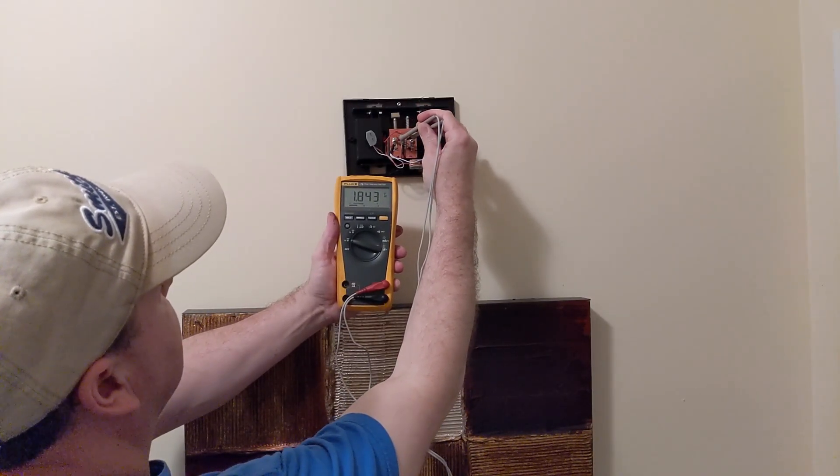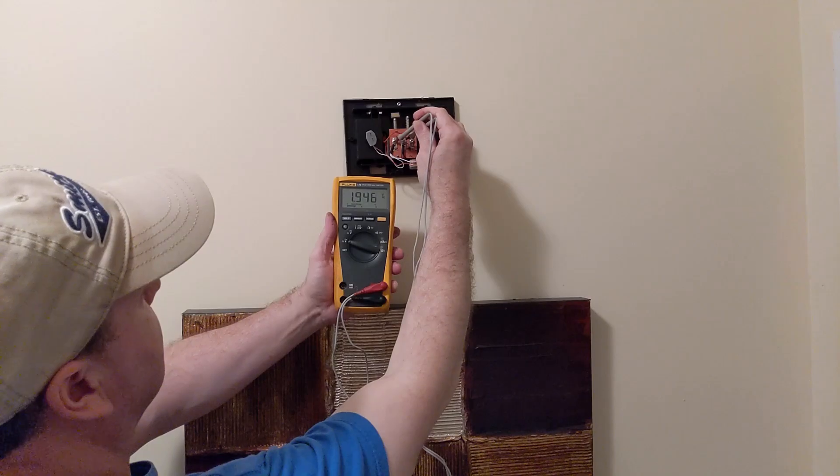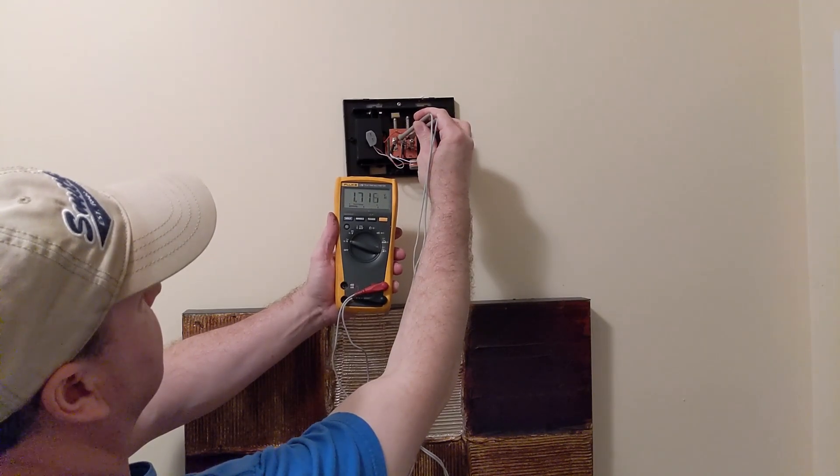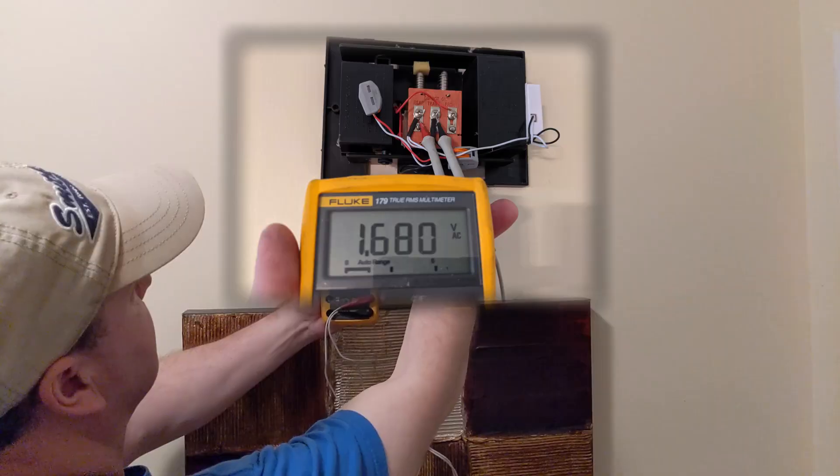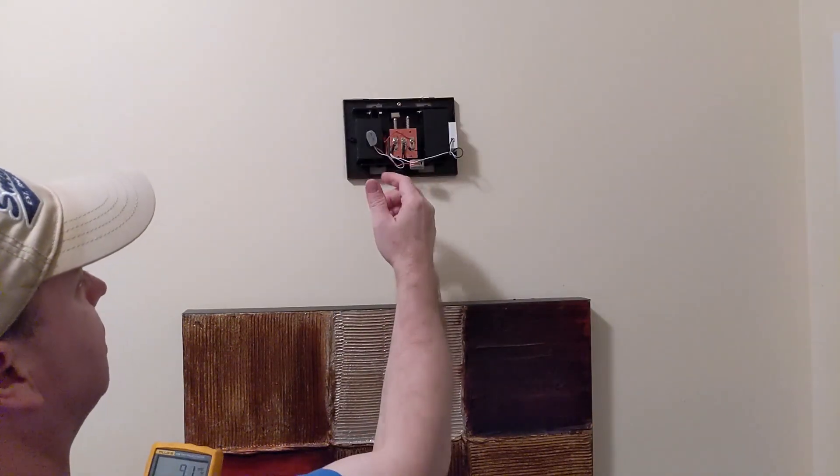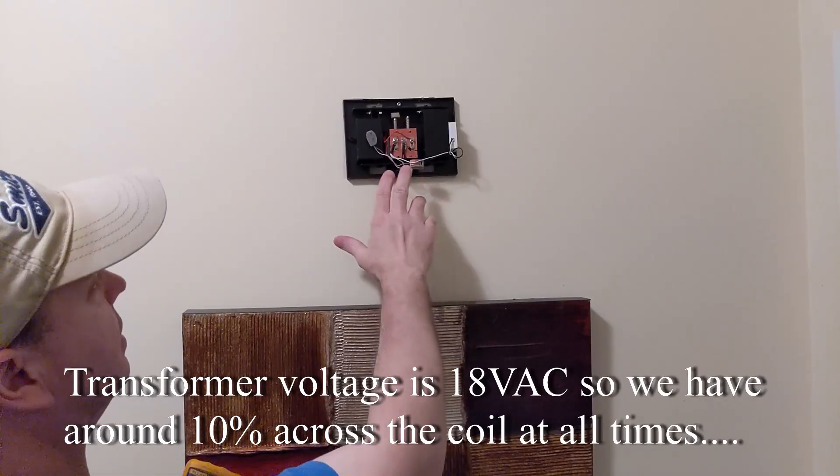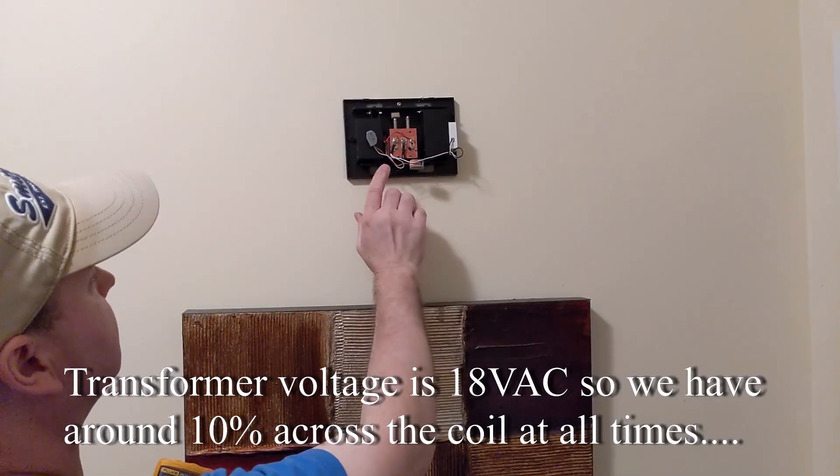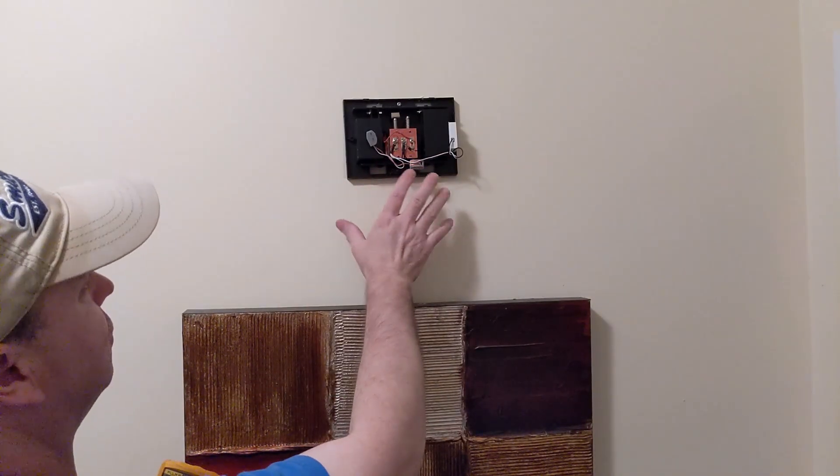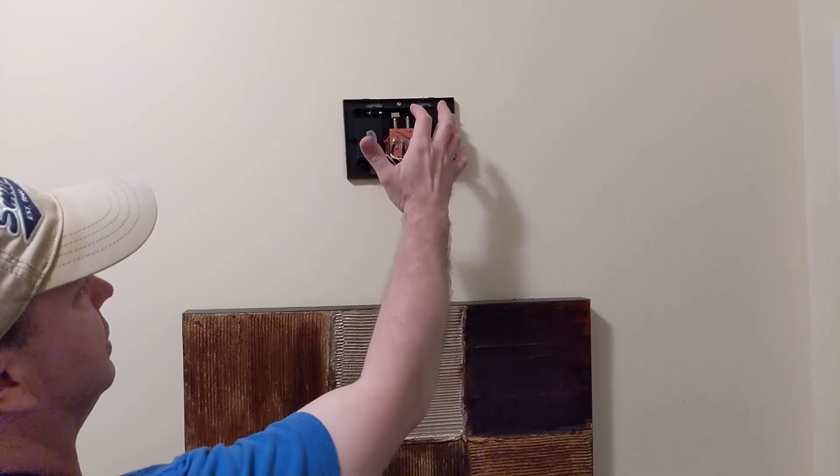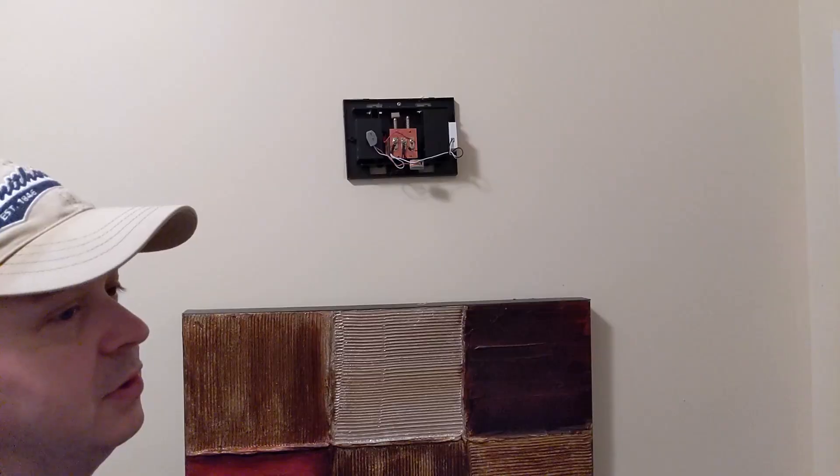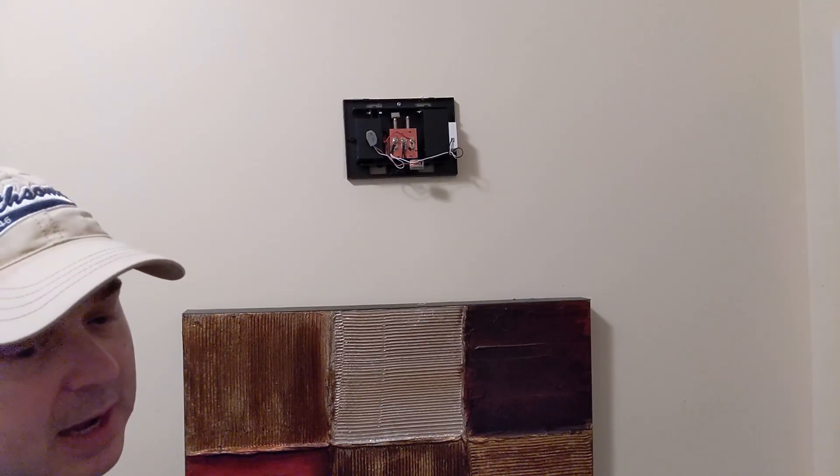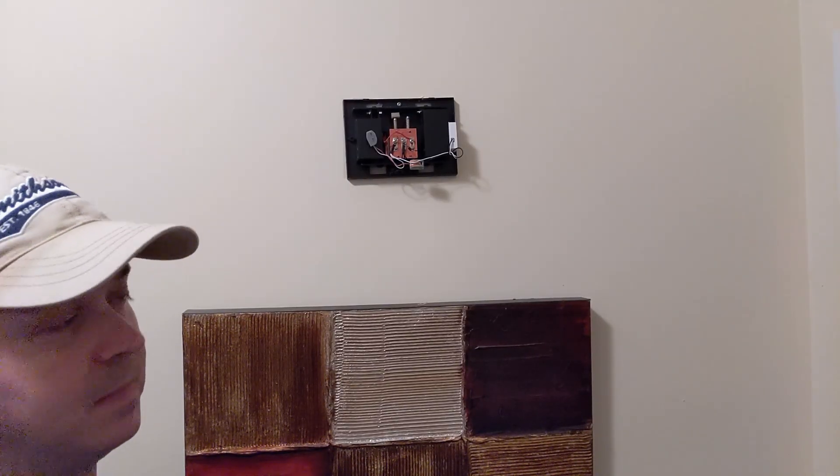So this one in particular, we have somewhere around 1.7 to 1.8 volts across as it goes to the video doorbell to power. We are getting somewhere around 10% voltage on this coil. Even though I don't think it's a big risk, I don't really like something going back and forth that much, just pulsing all the time. It's not terribly loud until everything's quiet and I put the cover back on.